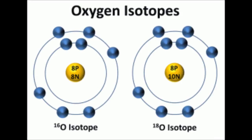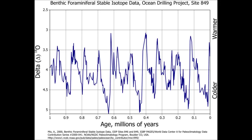The atoms being fractionated by nature are oxygen, and the two forms of oxygen isotopes are O16 and O18. When measuring samples that contain oxygen isotopes, those with higher amounts of O18 compared to O16 are said to have more positive O18 values, or are enriched. Those with less O18 and more O16 are considered more negative, or depleted.